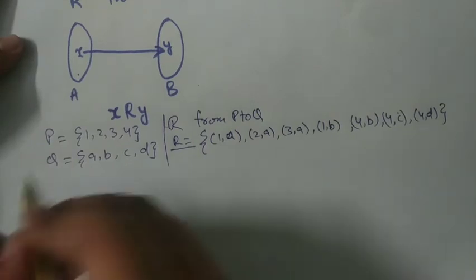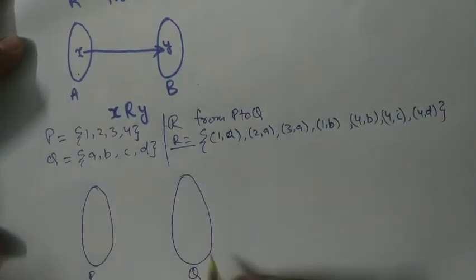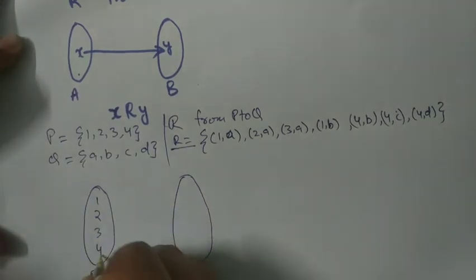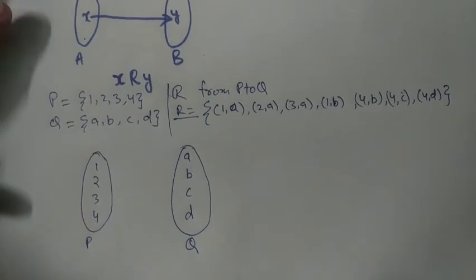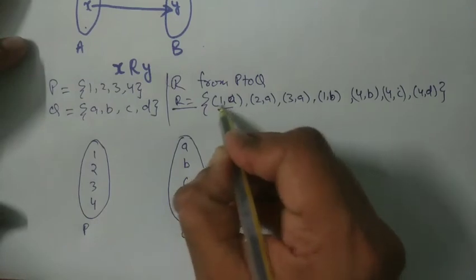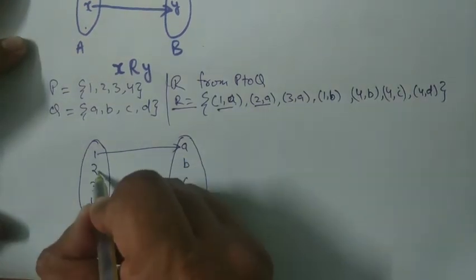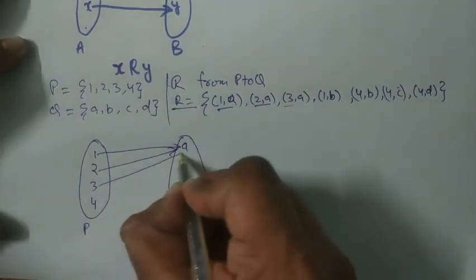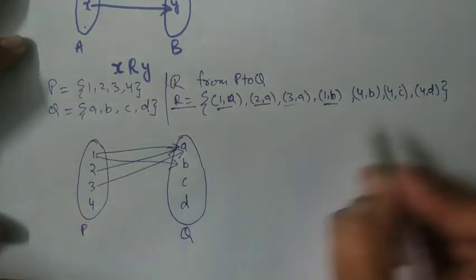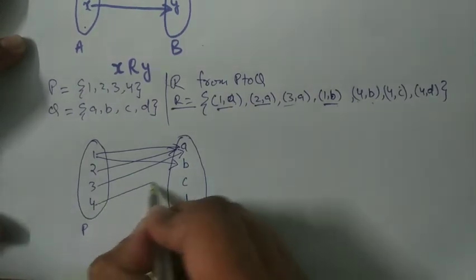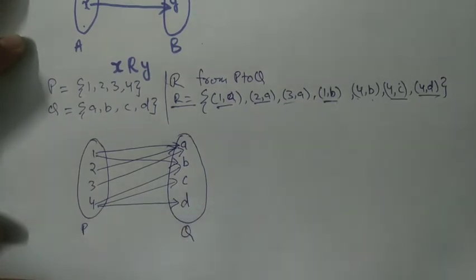To represent the relation by an arrow diagram, we draw two ellipses — one for set P and one for set Q. Set P has elements 1, 2, 3 and 4, and set Q has elements A, B, C and D. In relation R, 1 is related to A so we draw an arrow from 1 to A; 2 is also related to A so an arrow from 2 to A; 3 is related to A so an arrow from 3 to A. Since 1 is related to B, we draw an arrow from 1 to B; 4 is related to B so an arrow from 4 to B; 4 is related to C so an arrow from 4 to C; and for (4,D) an arrow from 4 to D.